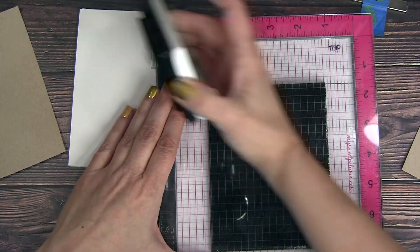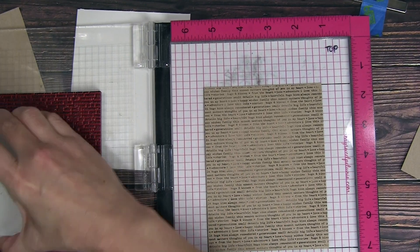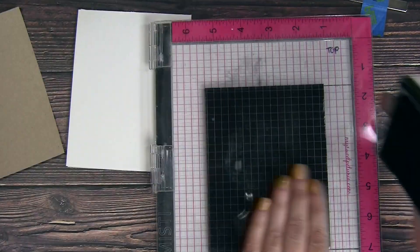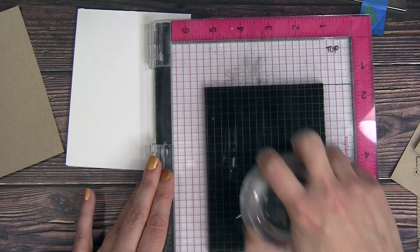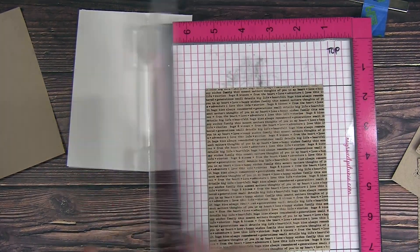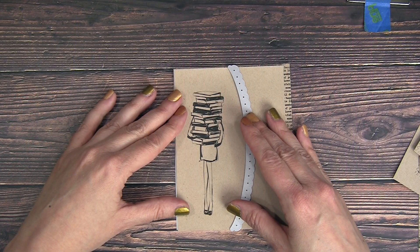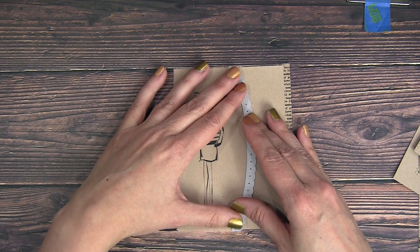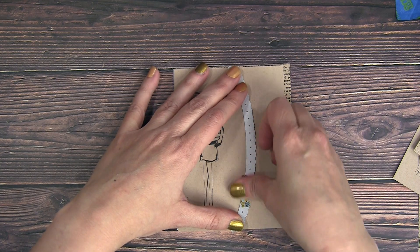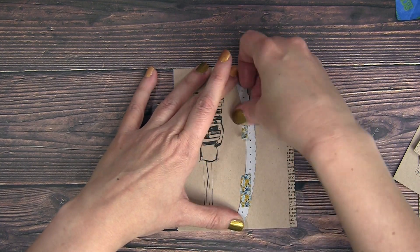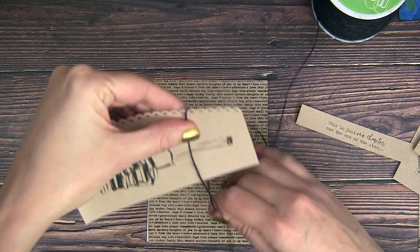I'm using some VersaFine Onyx ink, and I'm just going to stamp that all over the front of my cardstock here. Just making sure I get a good impression. I'm creating even pressure and just rubbing over the top there. I do have the top of a candle that I had randomly sitting around, and I'm using that to create pressure.